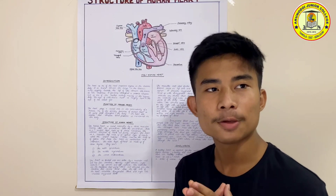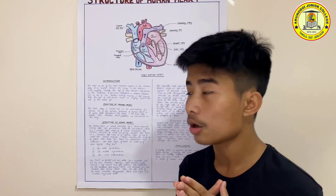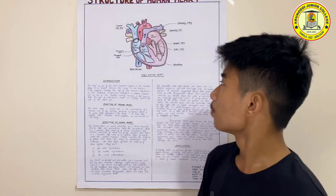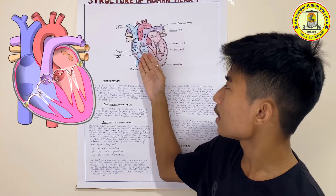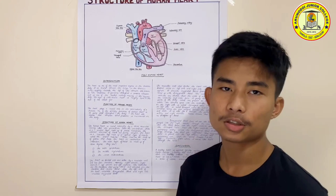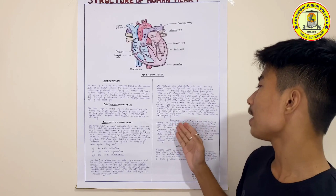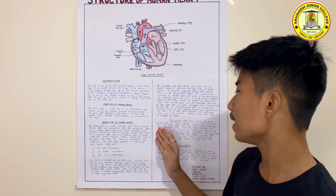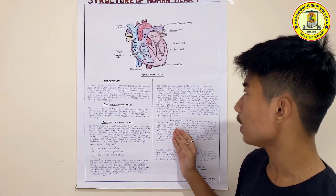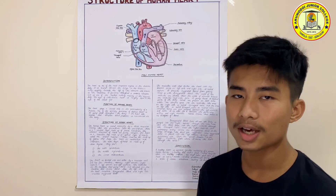Valves play an important role in the heart. They are present on both sides where the atria open into the ventricles. The valve on the right side is called the tricuspid valve and the one on the left side is called the bicuspid valve. Deoxygenated blood from all over the body is pumped to the right atrium through the vena cava, then flows into the right ventricle through the tricuspid valve.